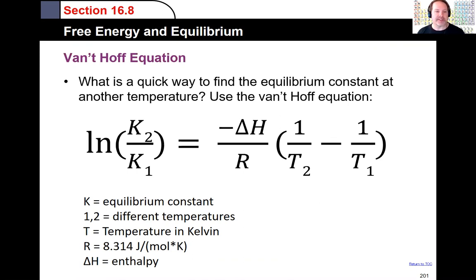What you need to know is usually the problems are given with a couple different temperatures, T1, T2, and then an equilibrium constant for one of those temperatures. You also need to know the enthalpy of the chemical reaction and R is the gas constant at 8.314 joules per mole Kelvin.